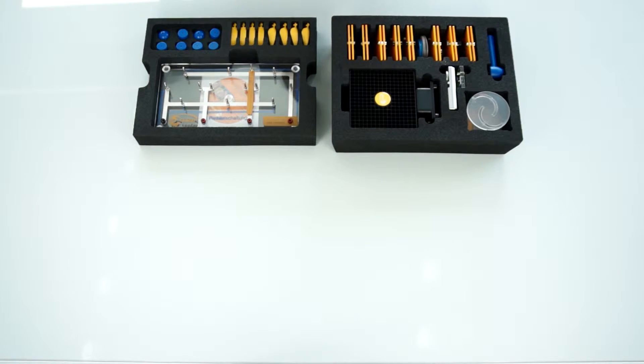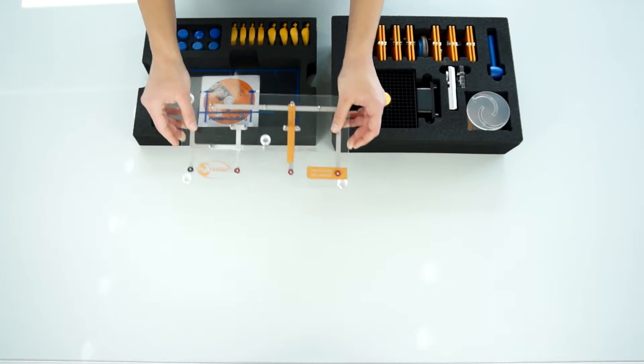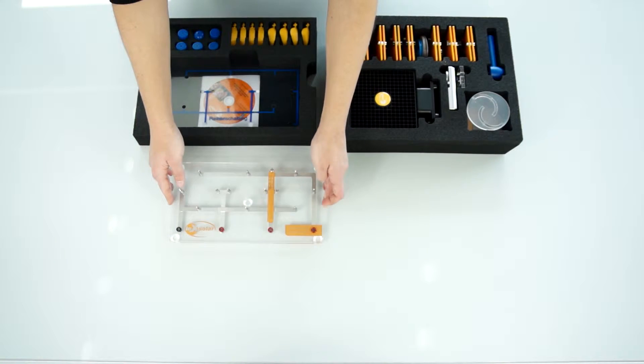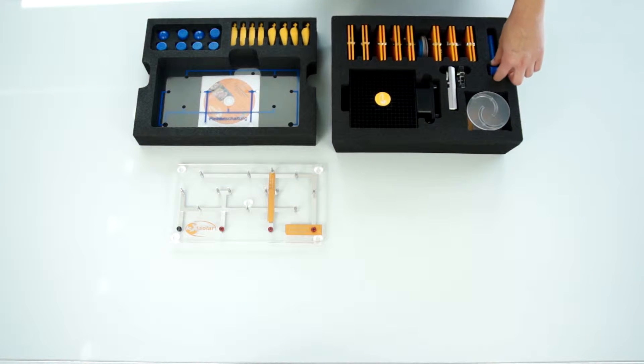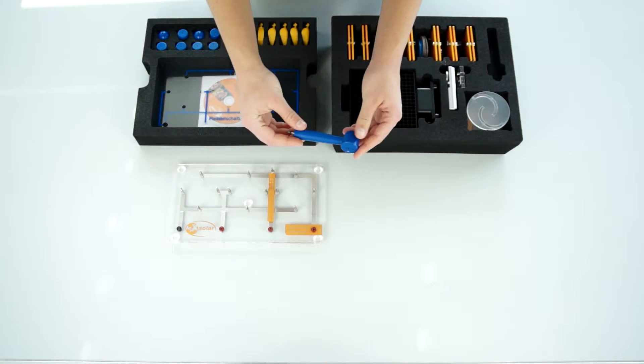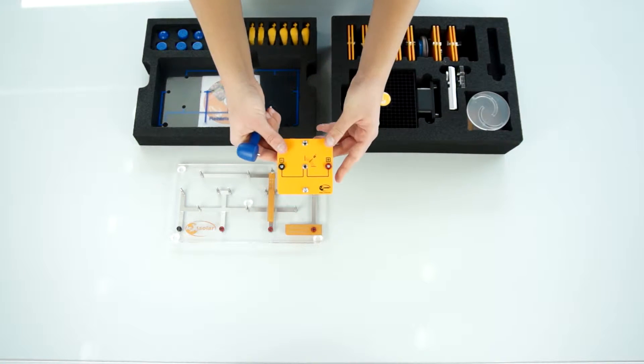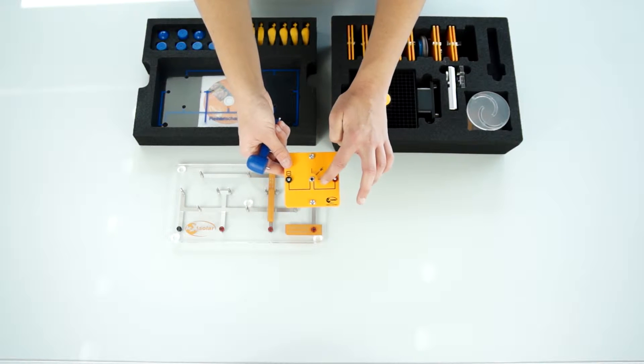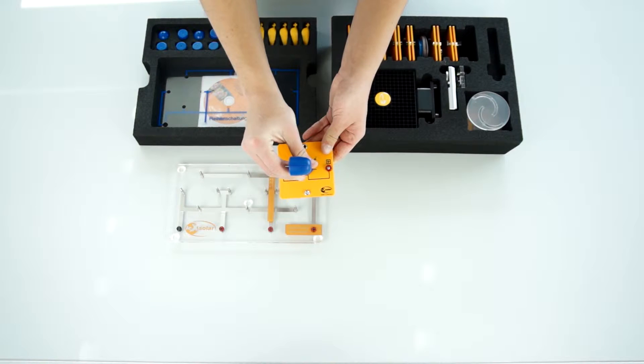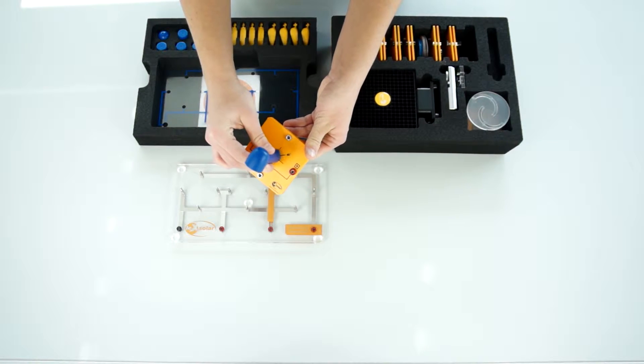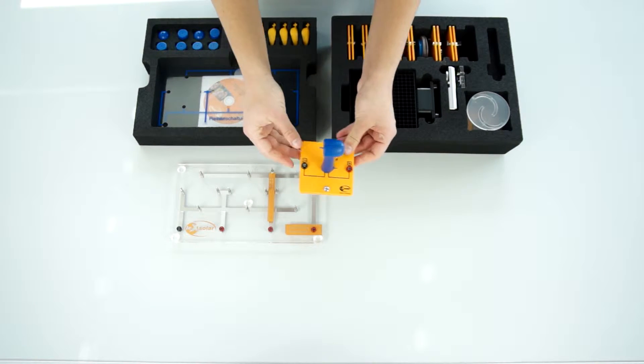For the construction of the experiment we first need the base unit on which the individual modules can be plugged in and connected electronically. In addition we require the wind turbine which is attached to the module plate. Due to the unique connector system the wind turbine is rotatably mounted so that, for example, experiments about the dependence on wind direction can be performed. For this purpose an angle scale is applied to the module plate.